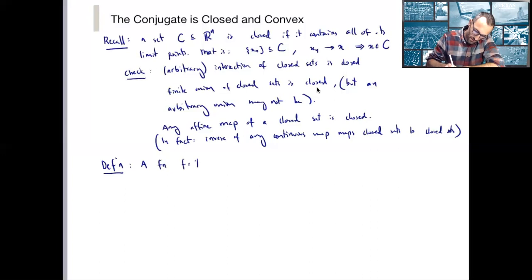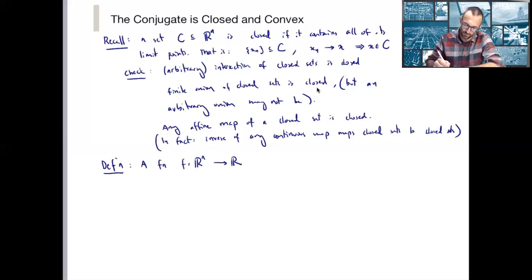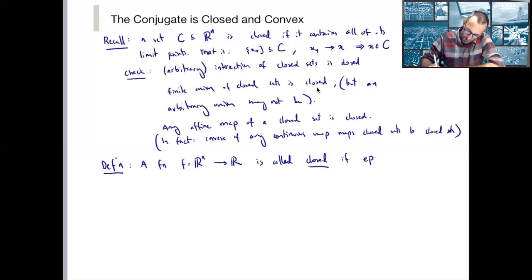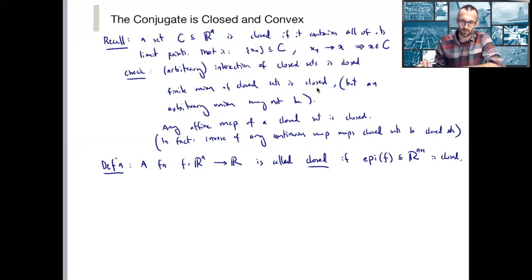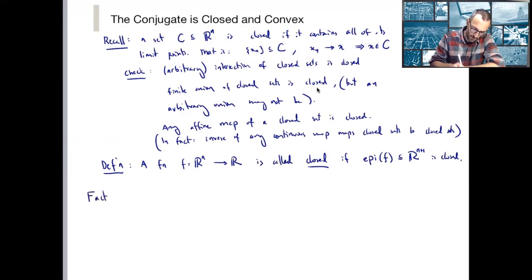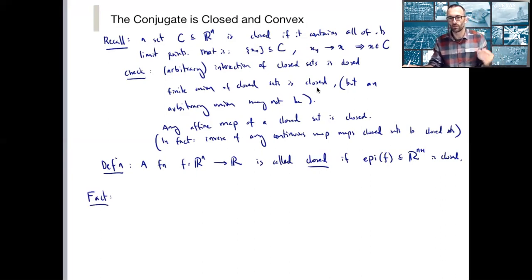This is an independent notion from convexity, so a function can be closed but not be convex. A function is called closed if its epigraph is closed. A simple fact is that if F is any function — it doesn't have to be convex, it doesn't have to be closed — then its Fenchel conjugate will always be closed and convex.